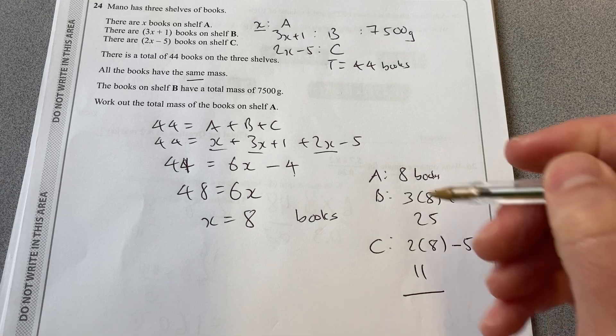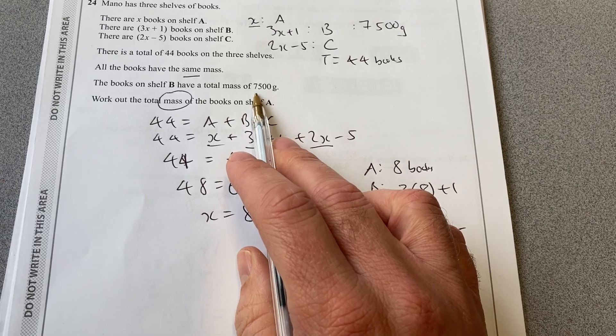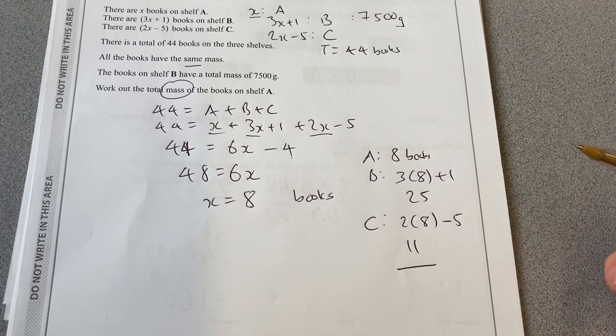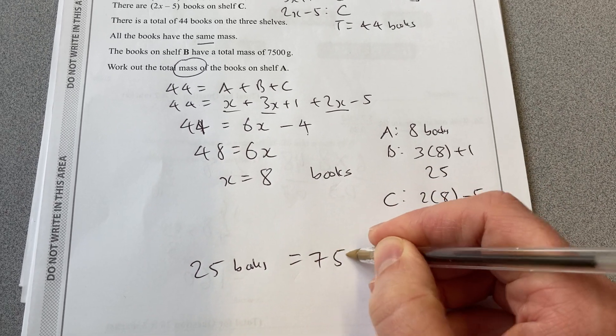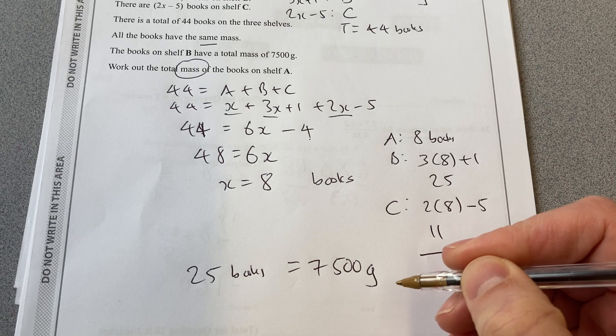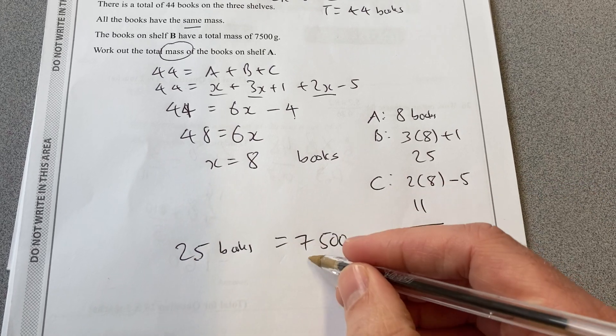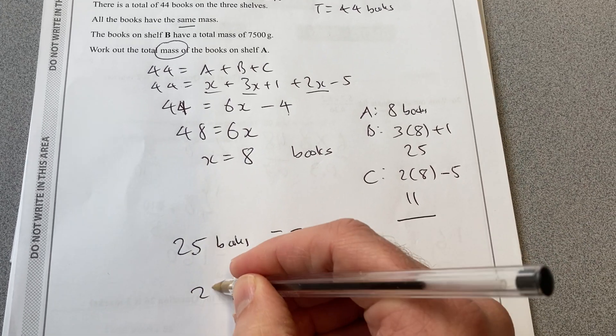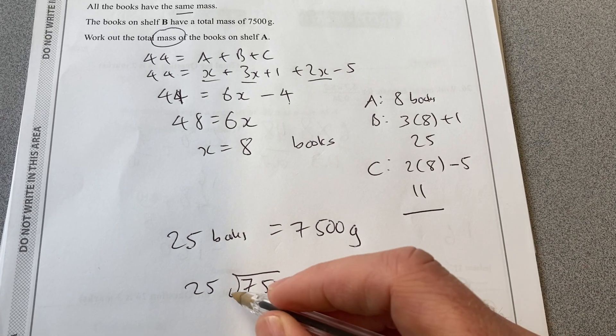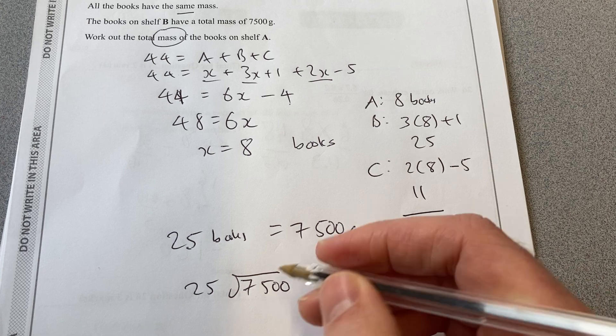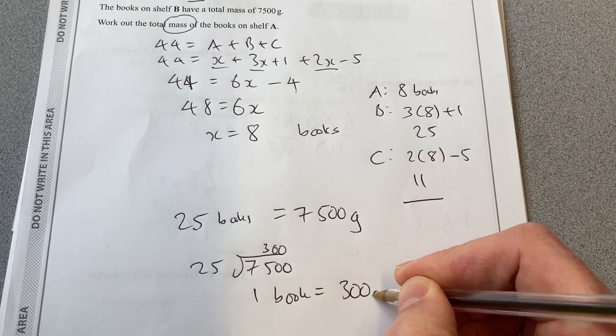I've got the number of books, but I need to find the total mass. What I've been told is that B is 7,500. So I now have another piece of information: 25 books equal 7,500 grams. So I need to work out how many lots of 25 are in that. I need to divide 7,500 by 25. I know that 25 goes into 75 three times. So I know then that one book is 300 grams.